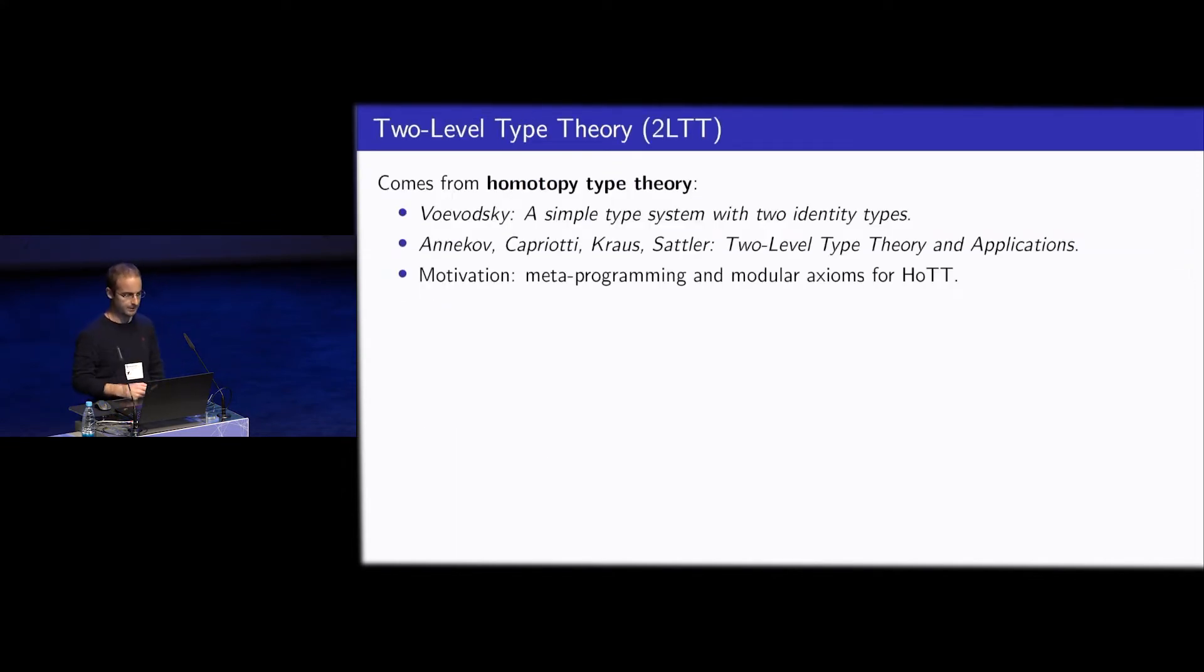Okay. So what is two-level type theory? This comes from homotopy type theory. First, the idea was developed by Voevodsky and then by Annenkov, Capriotti, Kraus, and Sattler. And the motivation was to do metaprogramming and kind of a modular treatment of axioms for homotopy type theory.